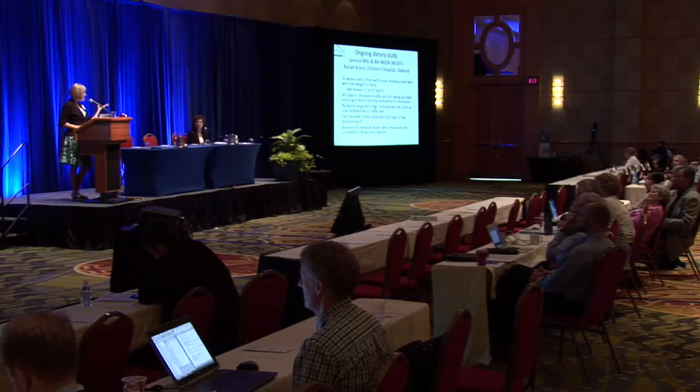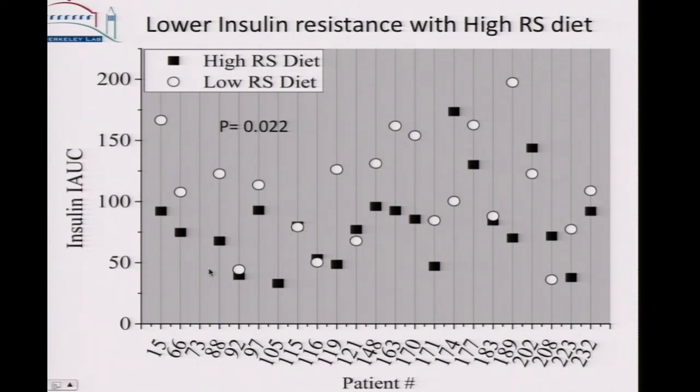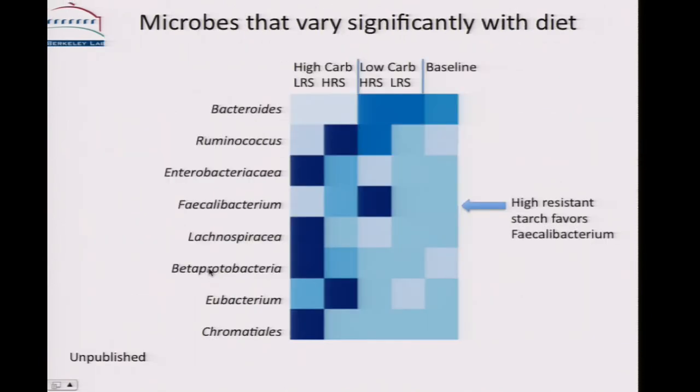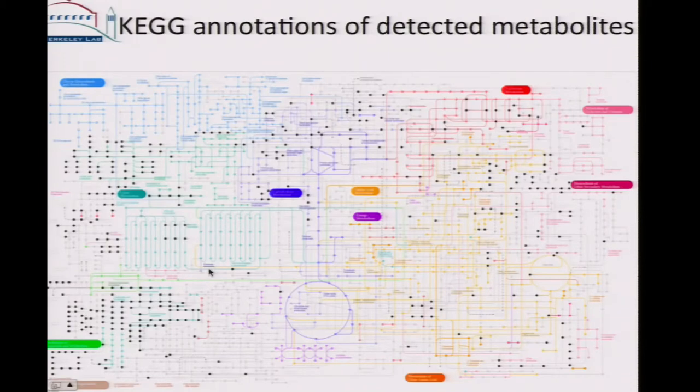I also want to mention a dietary study funded by General Mills and NIH NIDDK. We're looking at different high-carbohydrate versus low-carbohydrate diets in a crossover study, using the full multi-omics pipeline. With a high-resistant starch diet, we find lower insulin resistance. There is a significant difference in the microbiome between the high-carb and low-carb arms, and also between high-resistant starch and low-resistant starch in both branches. Faecalibacterium is enriched in the high-resistant starch diet, and metabolites also separate according to high-resistant starch diet.